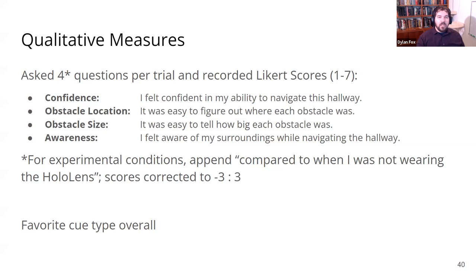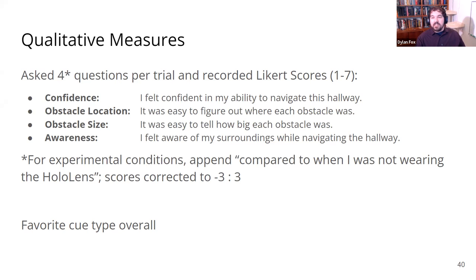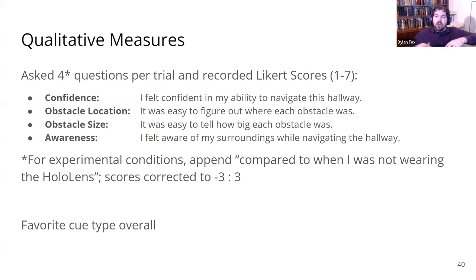This is one trial. For each condition, we would do one trial forward and one trial backward, then switch to the next condition. We had both qualitative and quantitative measures. For qualitative, we asked four questions per trial using Likert scores from one to seven. We wanted to understand: confidence — how confident they felt navigating the hallway; obstacle location — how easy it was to figure out where each obstacle was; obstacle size — how easy it was to tell how big each obstacle was; and awareness — how aware they felt of their surroundings while navigating, measuring how much attention the cues consumed.